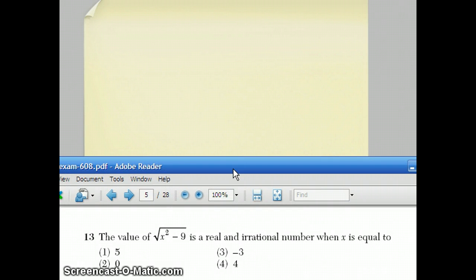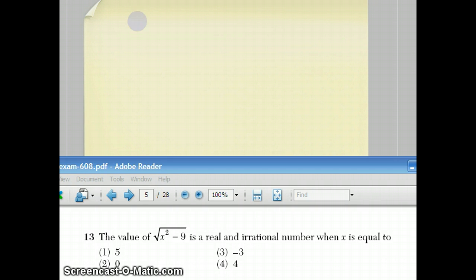So I'll try the four choices and see what happens. Choice 1, I get 5 squared, square root of 5 squared minus 9, which is square root of 25 minus 9, which is square root of 16, which happens to be 16 is a perfect square, so that's 4. So that's real, but it's rational.